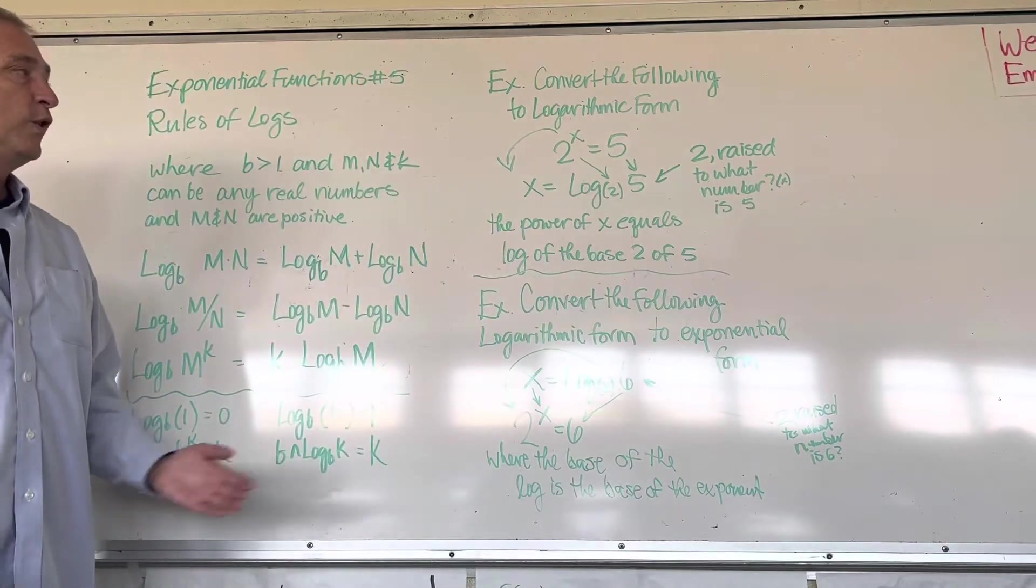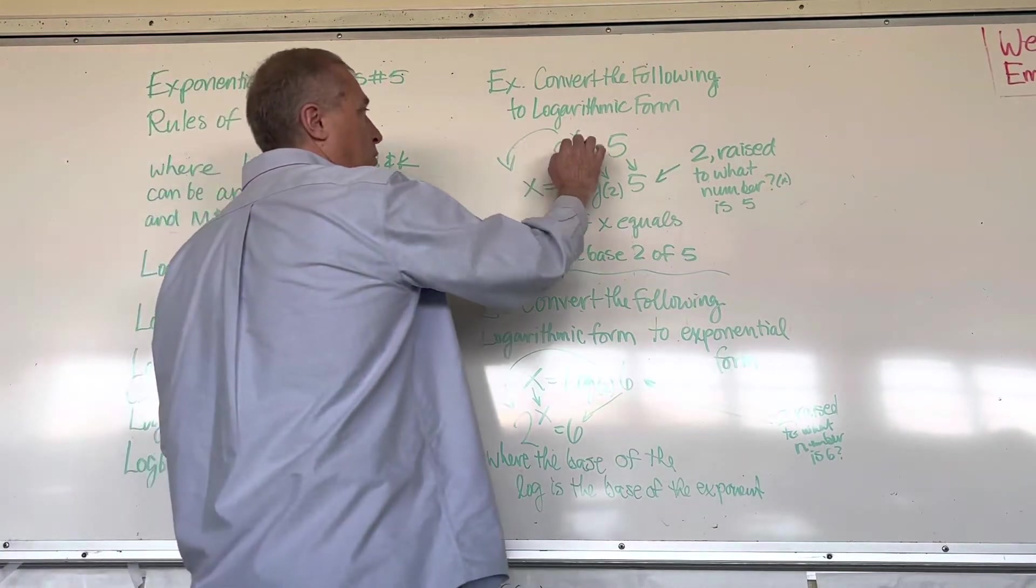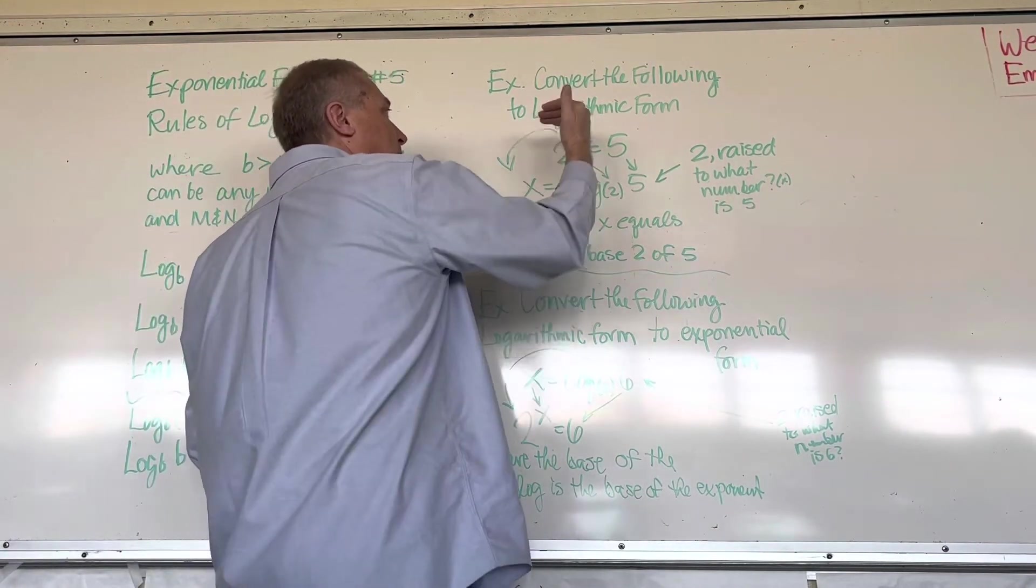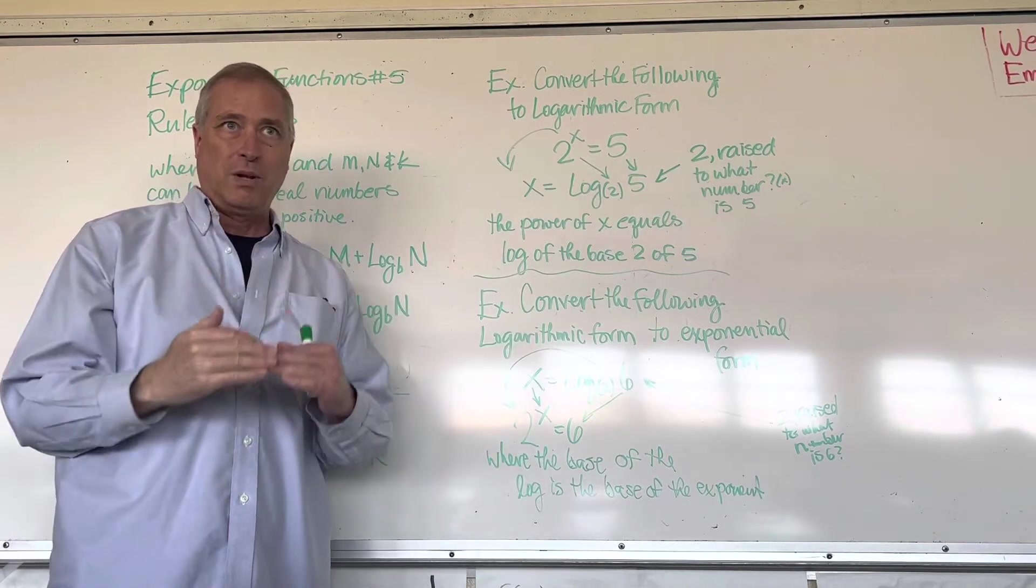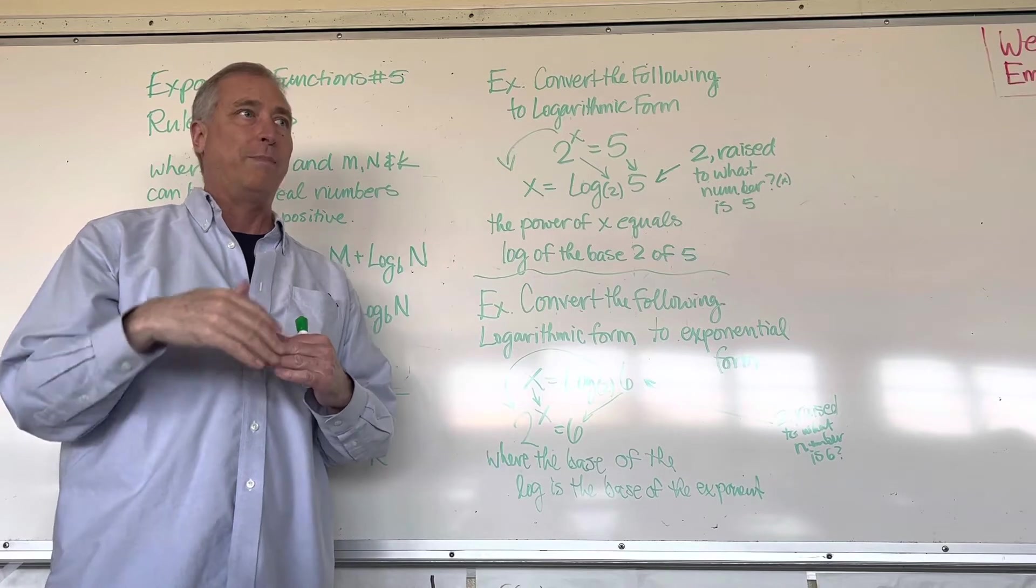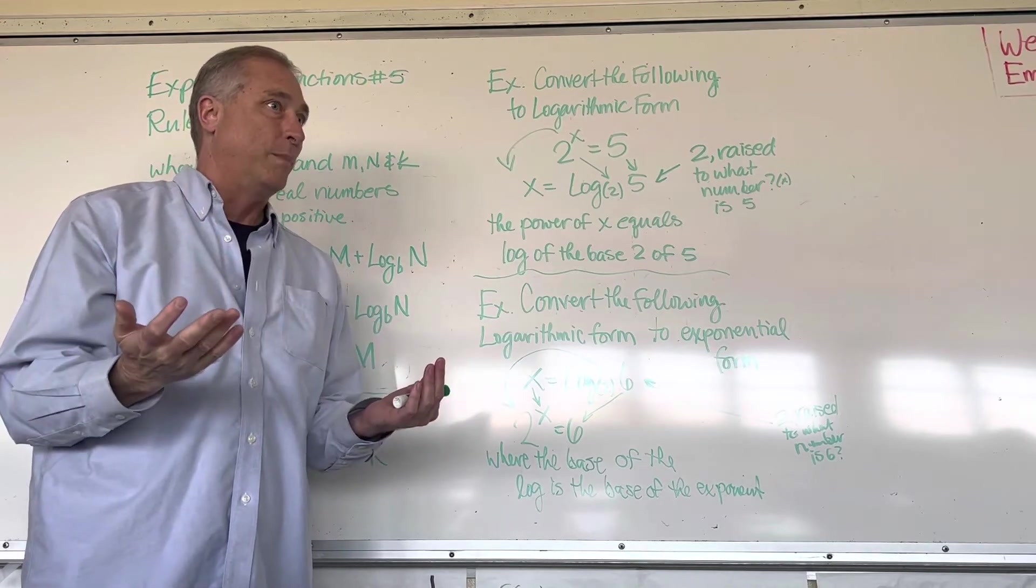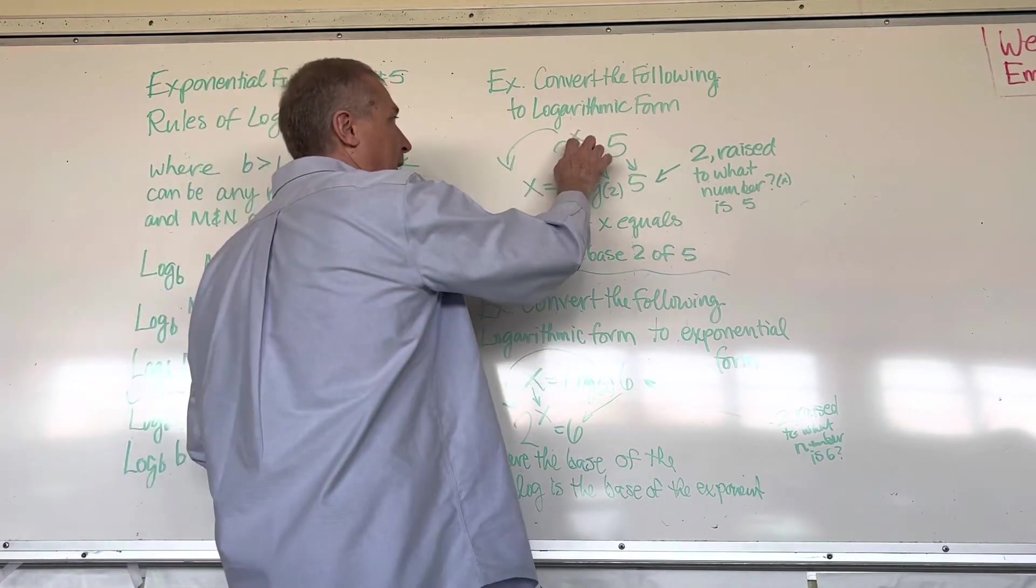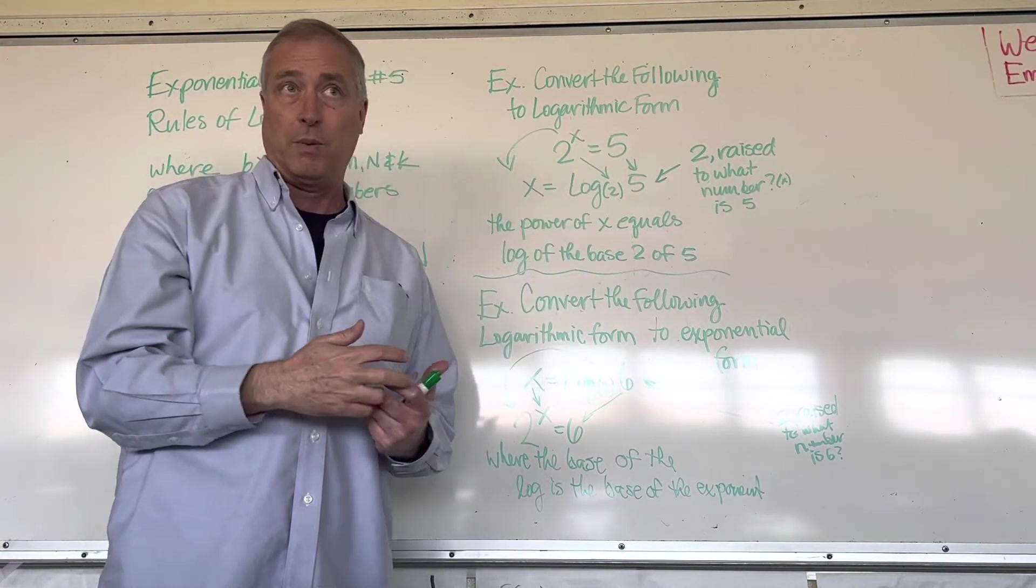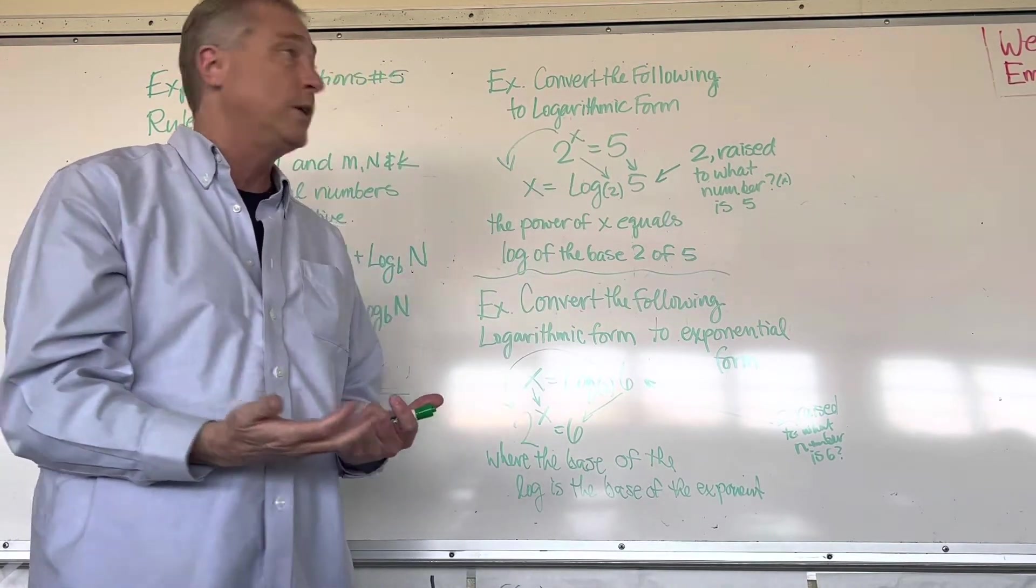So now you're an exponential function. What makes it exponential? The variable is in the power. You've never had a variable in a power before. You've had power two or three, something raised to a power. But you've never all of a sudden had a variable sitting in the power position. This is what makes it exponential.